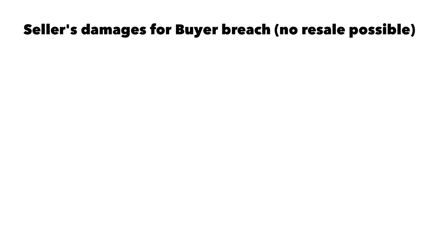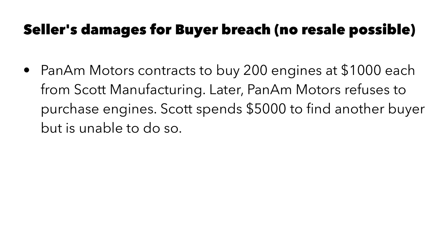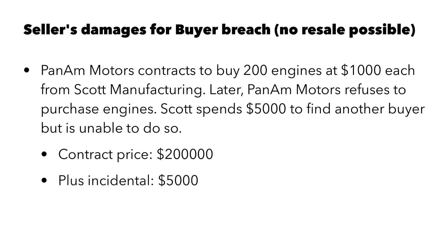What if there's no resale possible? This happens with specially manufactured goods where there is no market and it's difficult to set a market price. Pan Am Motors contracts to buy 200 engines at $1,000 each from Scott Manufacturing. Later, Pan Am refuses to go through with the purchase. Scott spends $5,000 to find another buyer for the engines but is unable to do so. In this case, the contract price is $200,000. The incidental damages are $5,000 — the cost of mitigation, what was spent attempting to reduce damages. So the total damages would be $205,000: the full contract price plus incidental.